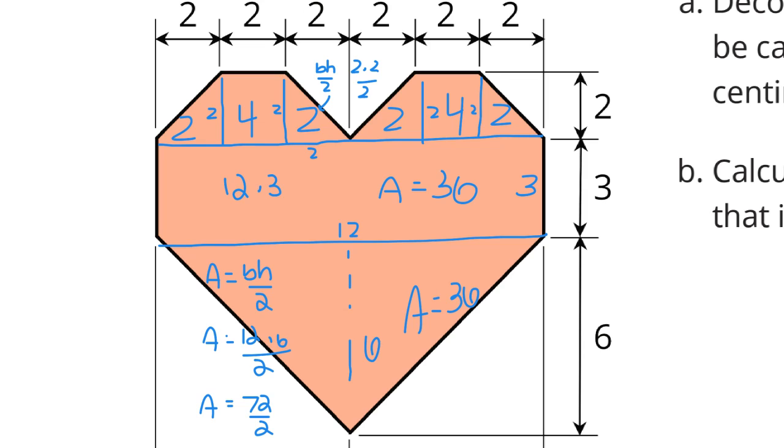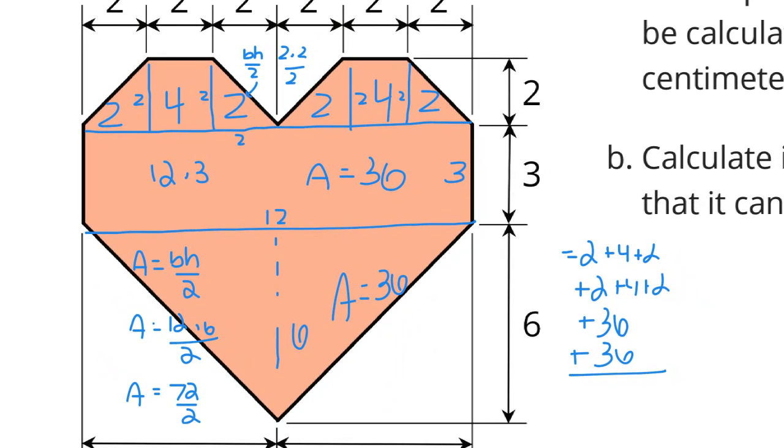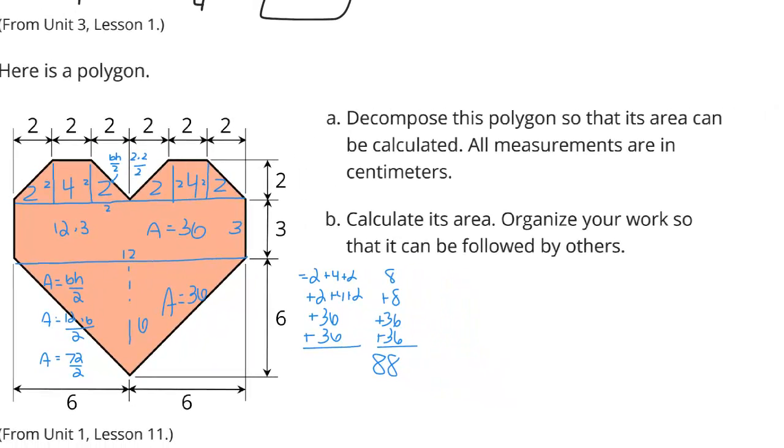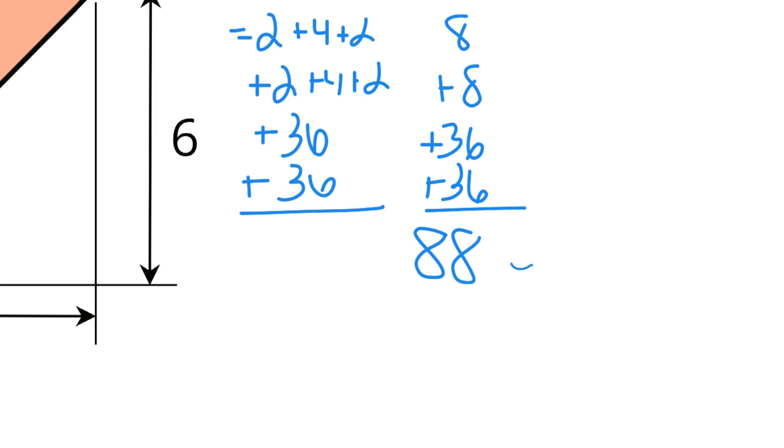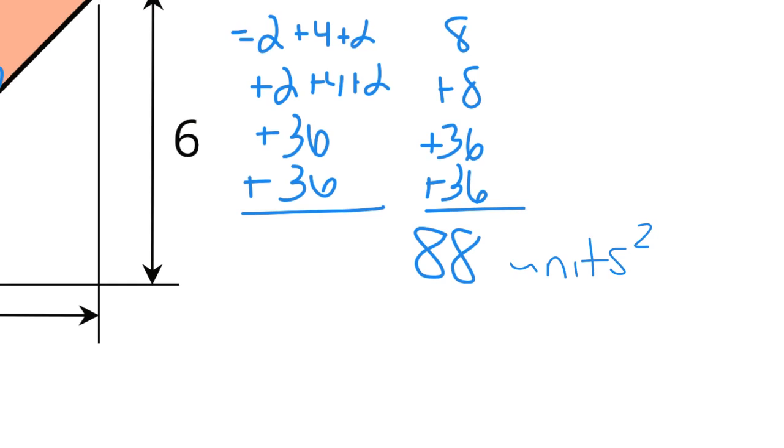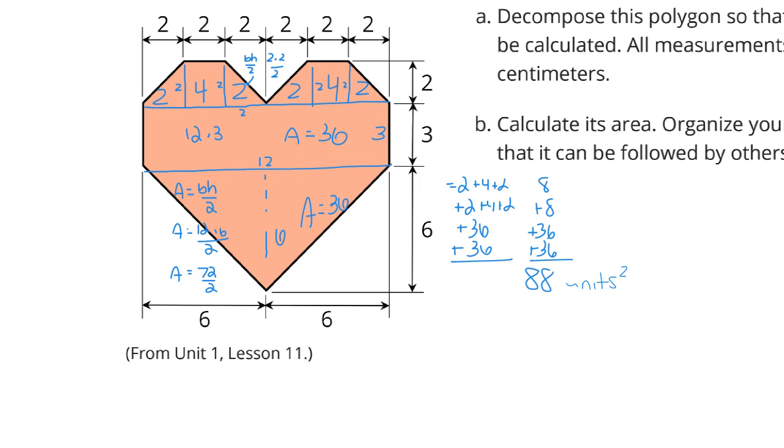Add these things all up. We have 2 plus 4 plus 2 plus 2 plus 2 plus 4 plus 2 plus 36 plus 36, and you end up with 88. And this was in just looks like units, so we could write 88 square units for our solution. So divvy it up, find the areas, and add them up.